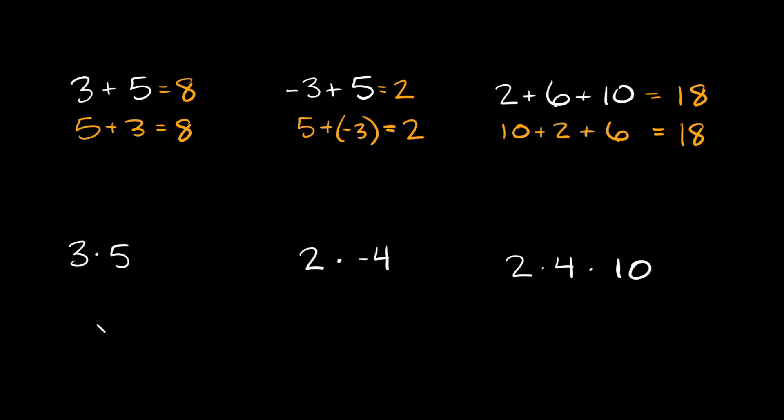And it also applies to multiplication. So down here, 3 times 5 is equal to 15. And then again, if you switch it around, 5 times 3, well that's still equal to 15.